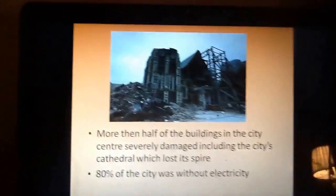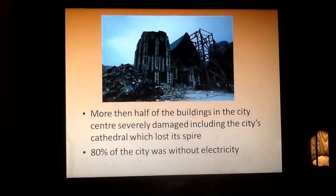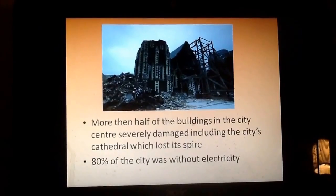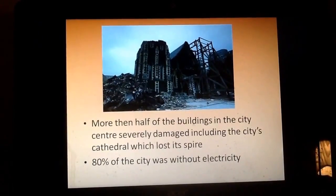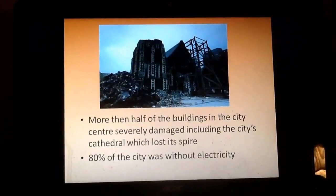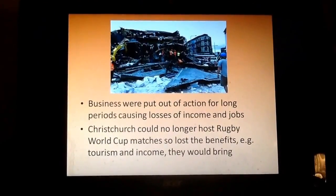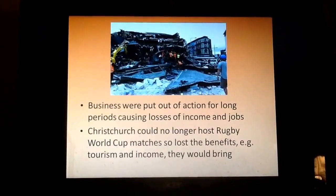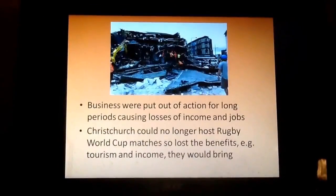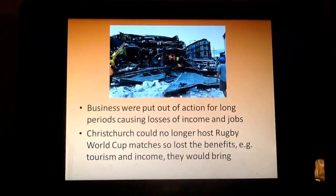More than half of the buildings in the city centre were severely damaged. That included the cathedral, which lost its spire, as you can see in the image here. About 80% of the city was left without electricity. Lots of businesses were also damaged, meaning they couldn't operate or make money, and people who worked for those businesses may have lost their jobs or couldn't go to work for a certain period of time.